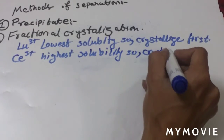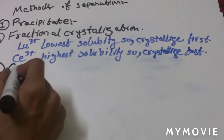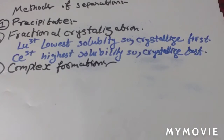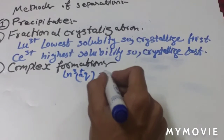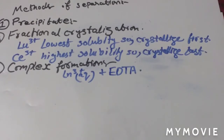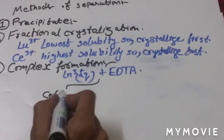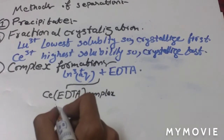The third method is complex formation. We form complexes using a reagent — specifically we use EDTA, which stands for ethylenediaminetetraacetic acid, in aqueous form. Cerium reacts with EDTA to form a cerium-EDTA complex, which is unstable.